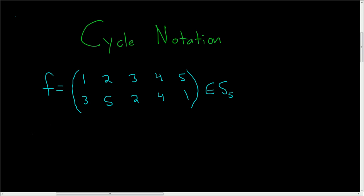And let's go ahead and write this in cycle notation. So this is called array notation or two-line notation. And we're going to write this in what's called cycle notation. Then we'll talk about what a cycle actually is.